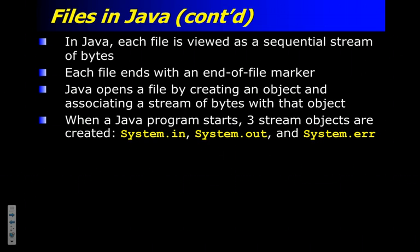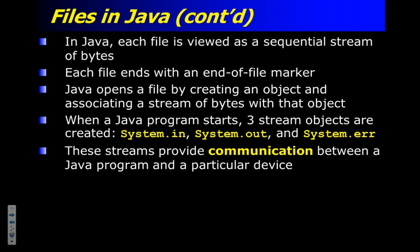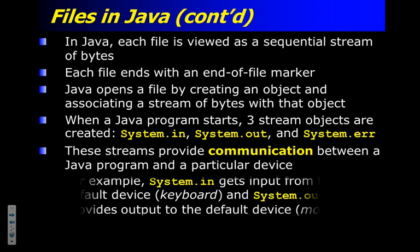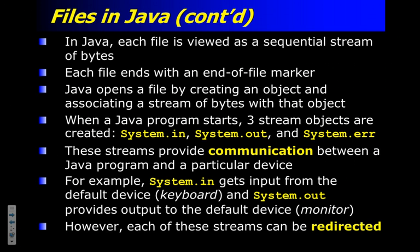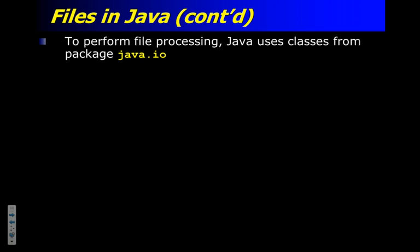I actually started your basic inputs with the J option pane because you guys wanted to start diving into graphics a little bit. Streams allow you to communicate between a Java program and something else — that something else could be a physical device like a disk drive, or a connection to some sort of network. System.in connects to a keyboard, System.out connects to a monitor or your screen. But you can redirect these streams, which is what we're going to do. One of the stream objects we'll be using comes from Java.io.